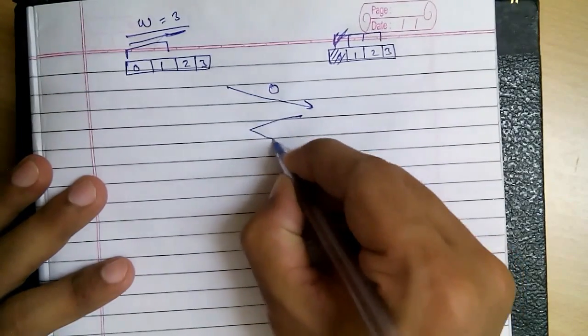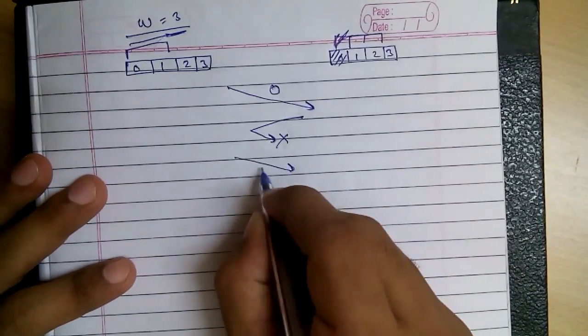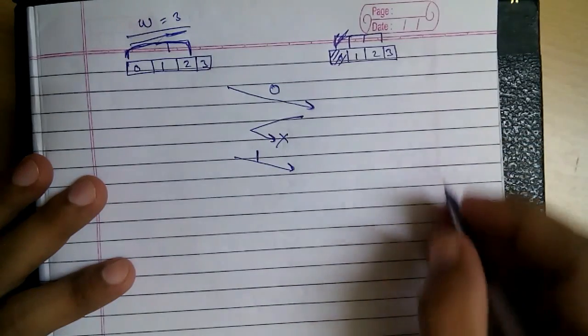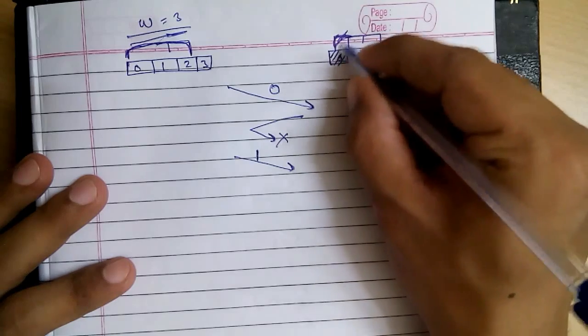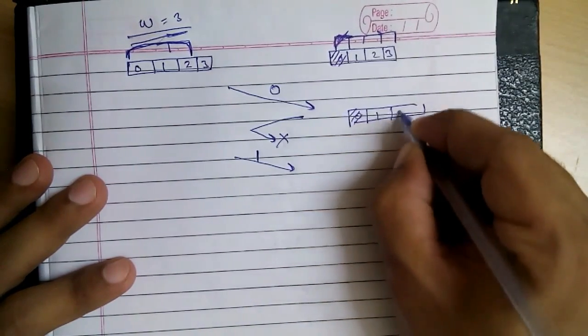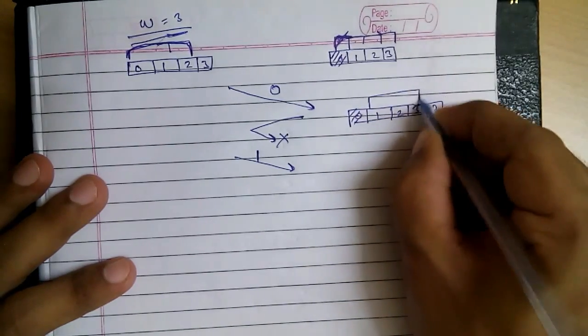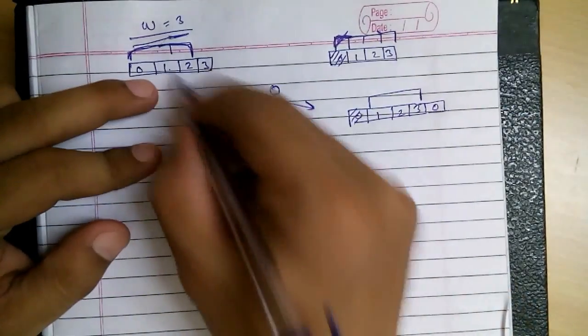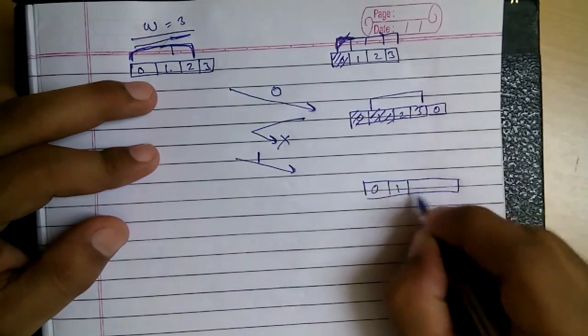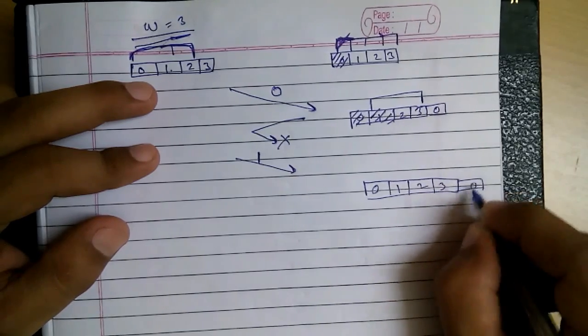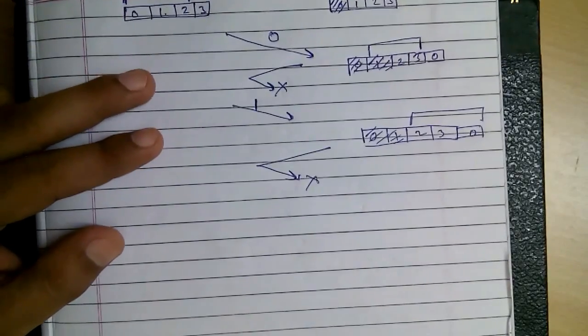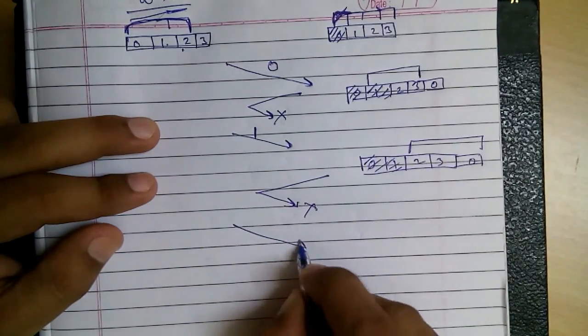At receiver, at sender, the sender sends frame 0, so frame 0 is received and the window shifts. And as usual, our acknowledgement gets lost. Then we send frame 1. Window size was 3, so after receiving this, we received 0, 1, 2, 3. Now the window is at this place. Now we send 1. 1 is received. The window shifts further 0, 1, 2, 3, 0. And our acknowledgement gets lost.